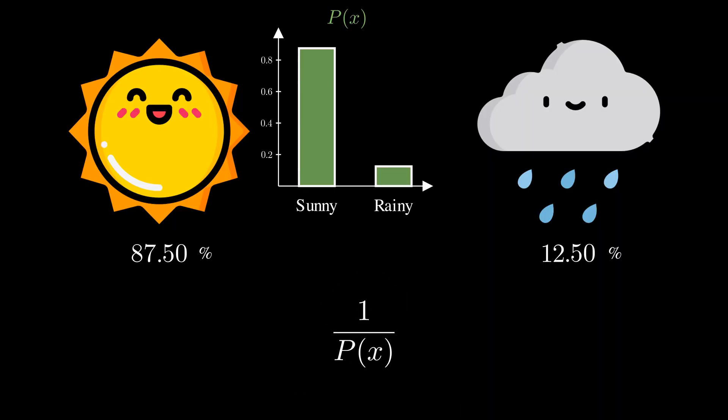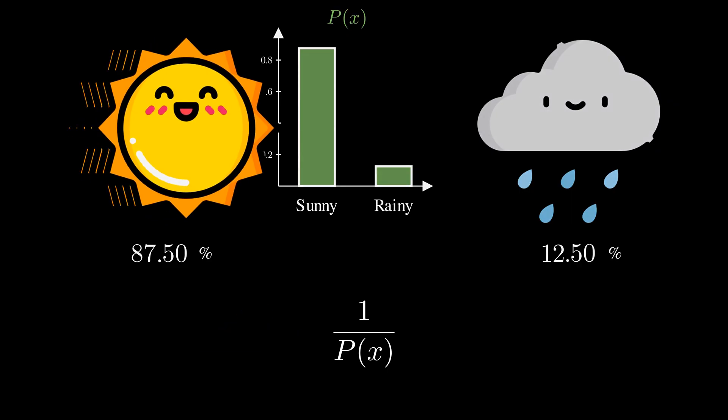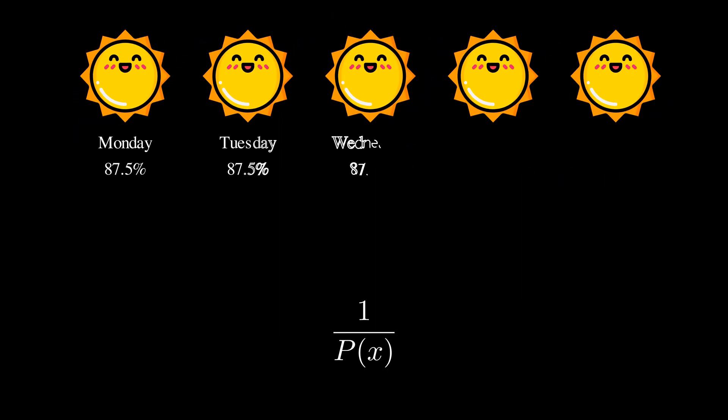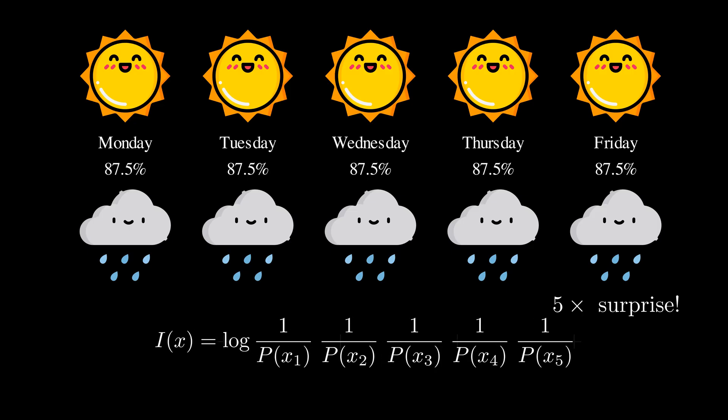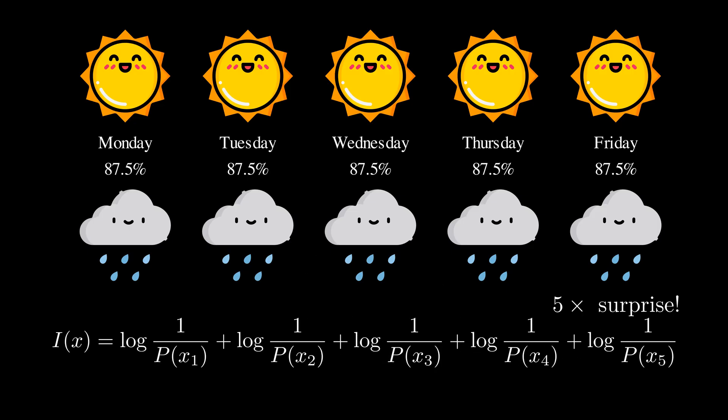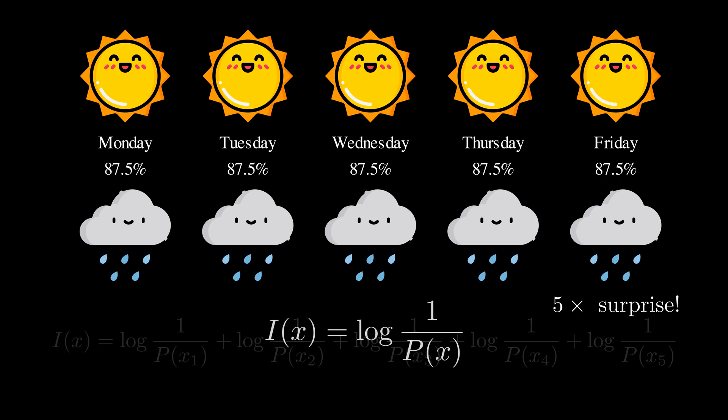The less likely an event, the more surprising it is. In other words, surprise is inversely proportional to probability. If it rains all week after a week-long sunny forecast, it's now 5 times as surprising. To capture this, we define surprise as log 1 over P(x). Why log? Because the probability of independent events multiplies, but logs turn products into sums, making surprise additive. This is known as surprise or self-information, measuring how much information or surprise a single outcome carries.